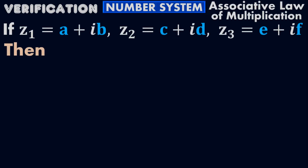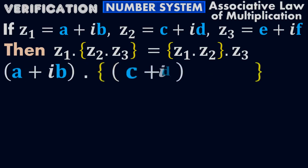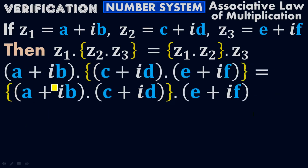According to the associative law of multiplication, (Z₁ · Z₂) · Z₃ = Z₁ · (Z₂ · Z₃), which equals (A + iB)(C + iD)(E + iF) = (A + iB)(C + iD)(E + iF), with the grouping on each side.